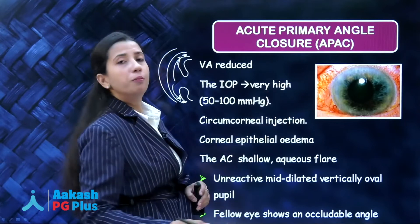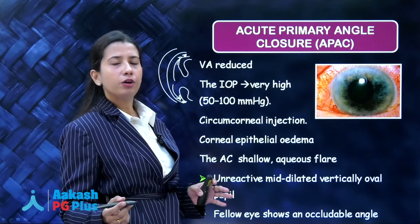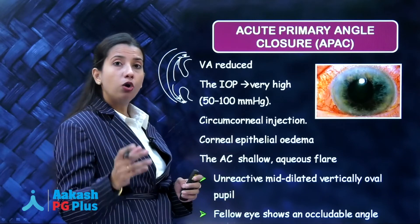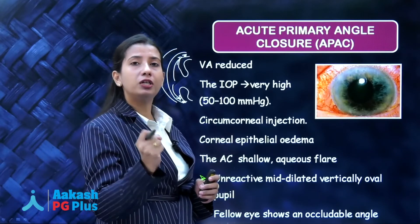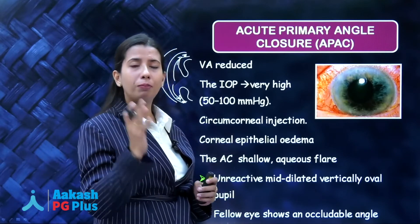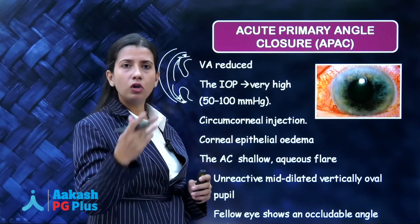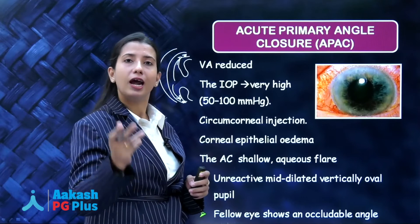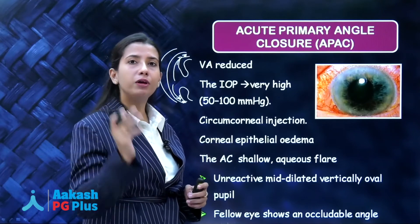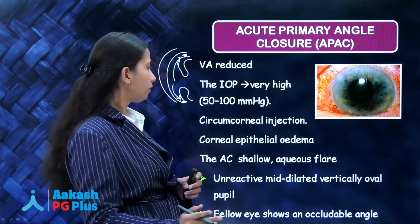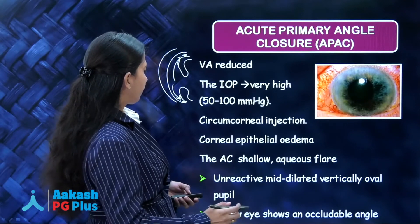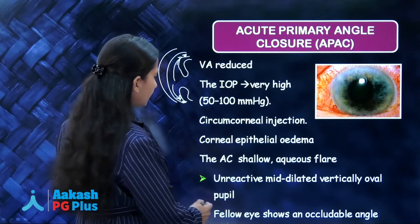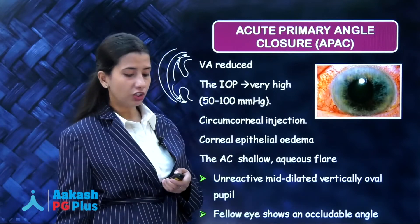Because of that much high pressure, there will be ischemia of the sphincter pupillae — the pupil will be mid-dilated and non-reacting. There will be circumciliary congestion. Also, because of such high pressure, the endothelial pump which constantly pumps water out of the cornea is not able to function. There will be corneal edema and a drop in vision. The other eye will also show shallow angles.